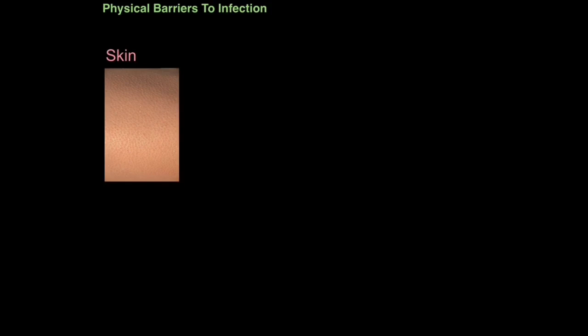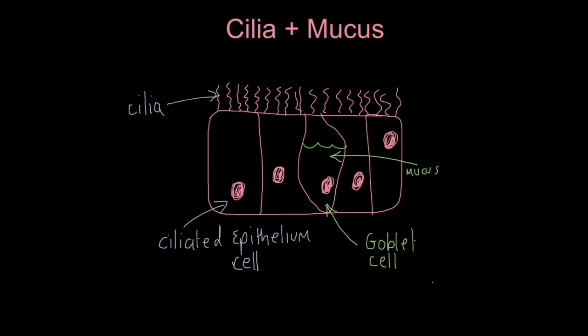The physical barriers to infection are physical obstructions to bacteria actually entering our bloodstream. The most obvious physical barrier is our skin. In the lining of our lungs and respiratory tract, we have two types of cells which work together to help clear infection. Firstly, we have ciliated epithelium cells — you can see these cells here, which look like they've got a spiky sort of haircut. Those are tiny hair-like extensions called cilia. We also have goblet cells, which think of like a cup that holds mucus.